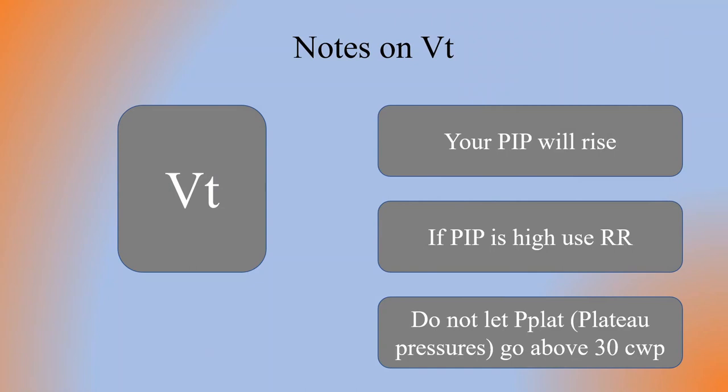If you increase the tidal volume, just a few things to look out for: your PIP will rise if you increase the tidal volume, which is fine — just be aware of how high your PIP is going. If your PIP is already very high, let's say 35 centimeters of water pressure, then you most likely want to go to your respiratory rate instead of increasing the tidal volume.